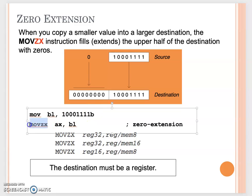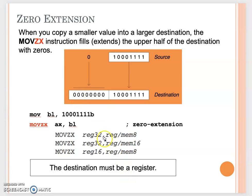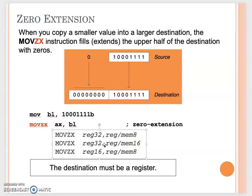For example, BL is one byte but you cannot use a plain MOV from BL to AX. Instead you use MOVZX, which will overwrite the first byte of AX and fill the rest with zero. For MOVZX syntax, your destination has to be a register — it can be a four-byte or two-byte register — but your source operand can be a smaller register or memory operand.